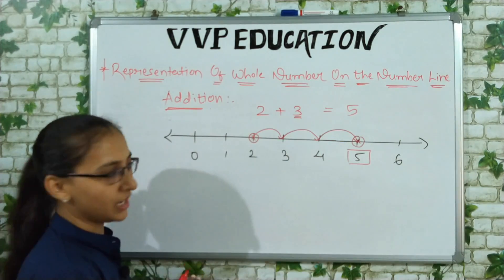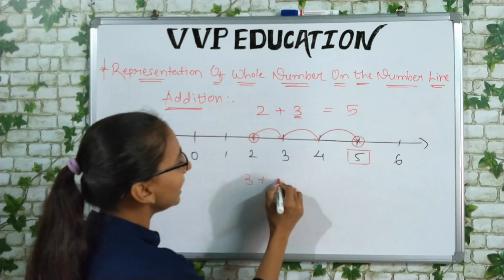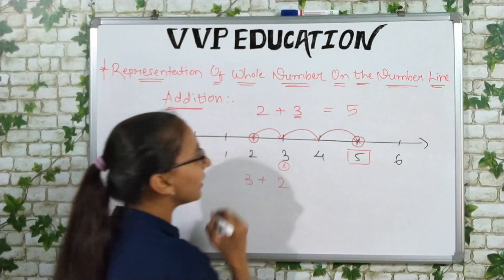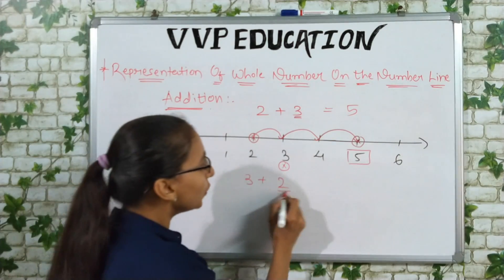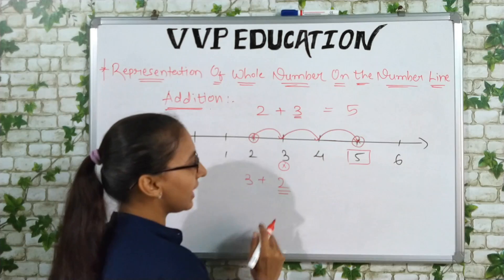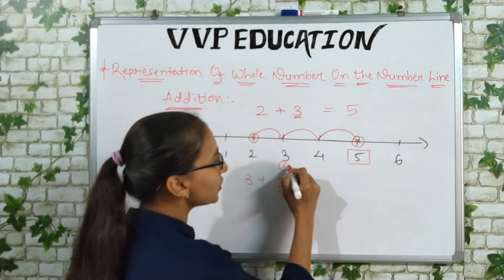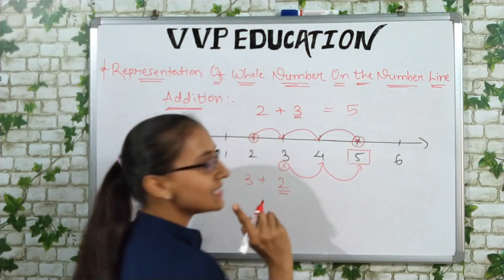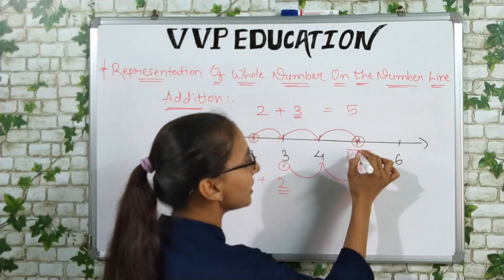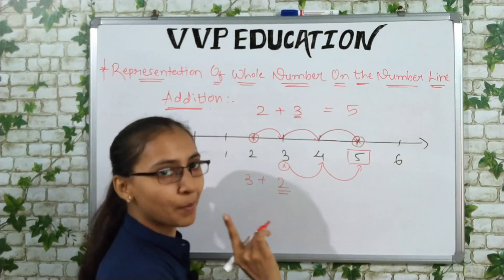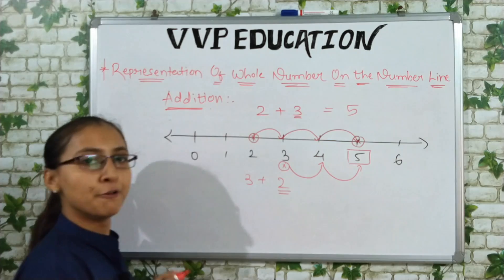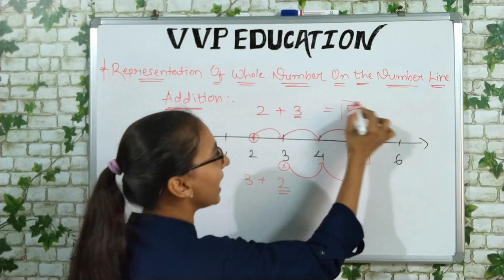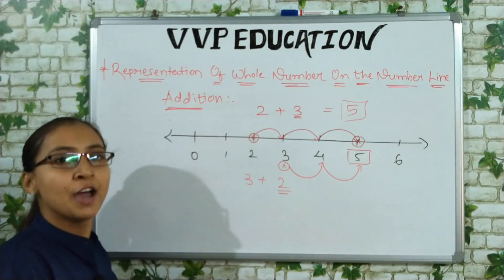Now let's try 3 plus 2. I start at 3 and move 2 steps to the right: 3 to 4 is one step, 4 to 5 is two steps. Again our destination point is 5. So whether you do 2 plus 3 or 3 plus 2, the answer is 5.